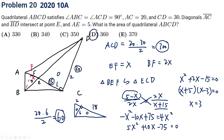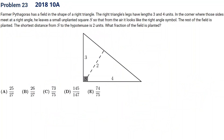This is a very good example of using similar triangles, and then you need to solve some algebra equations. The next one comes from 2018 10A, problem 23. Let's pause the video and think about it. Let's come back. The question is: what fraction is planted? We just need to find the side length.